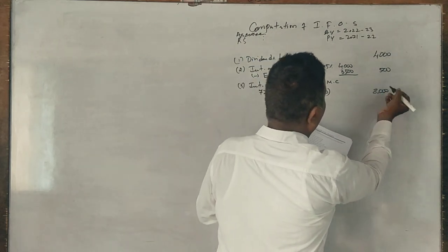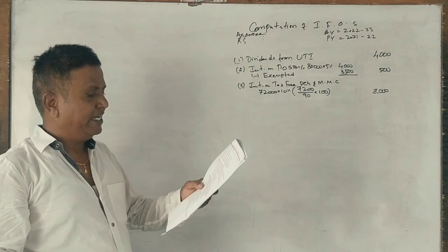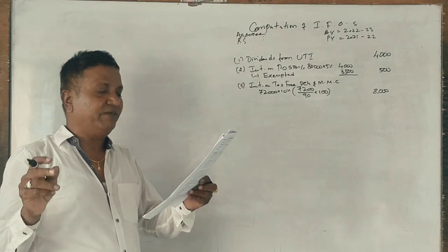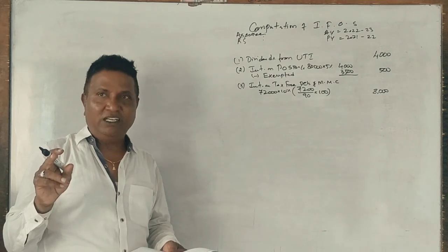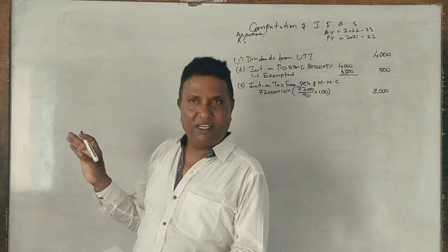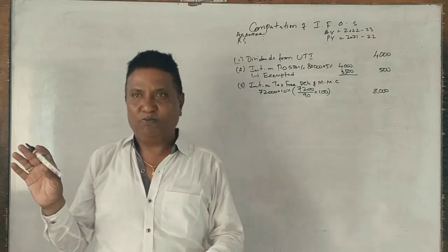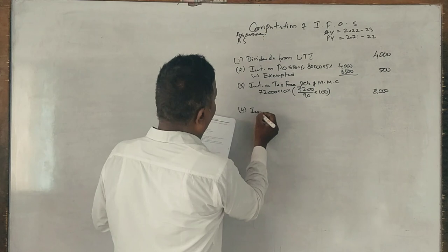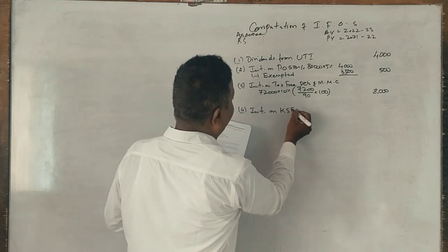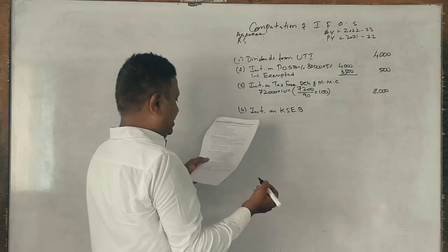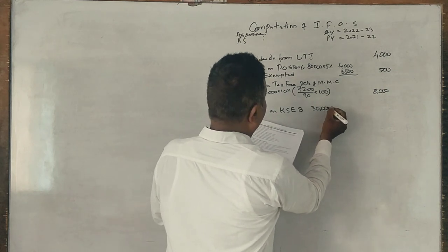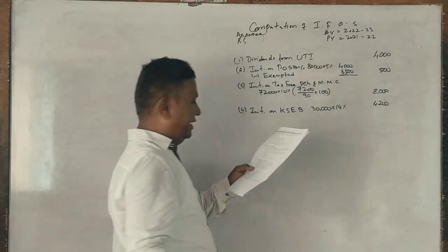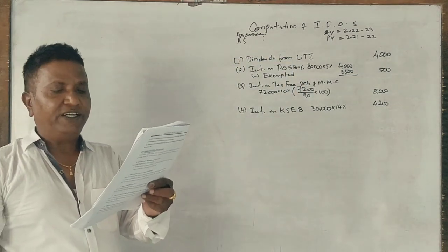14 percent Karnataka State Electricity Board bonds. These are government bonds but tax-free. Interest on Karnataka State Electricity Board: 30,000 into 14 percent equals 4,200.